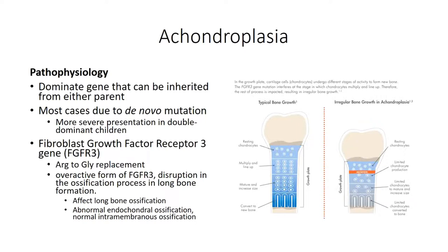Because the effect is specific to chondroblasts, endochondral ossification — but not intramembranous ossification — is affected. As a result, patients with this condition have stunted growth in the long bones making up the appendicular skeleton but typically have normal-size heads.